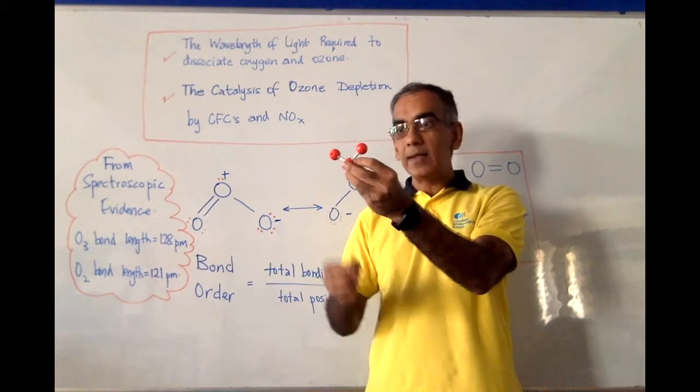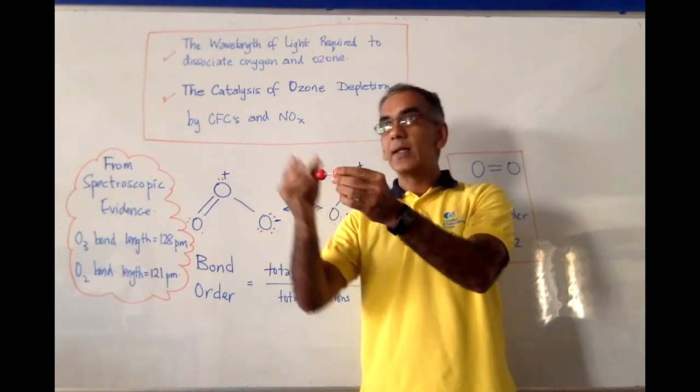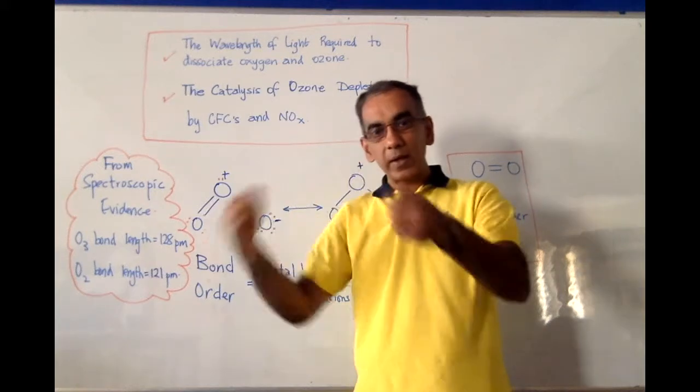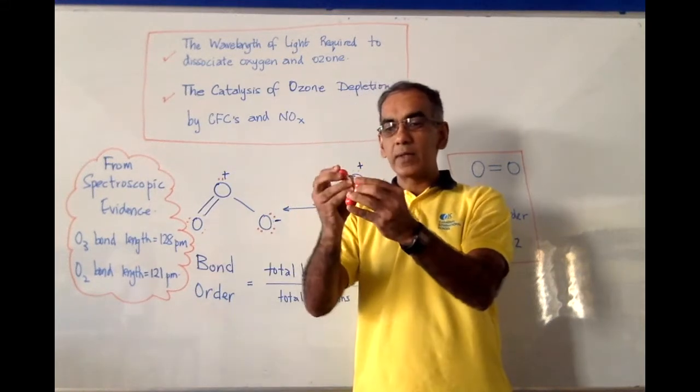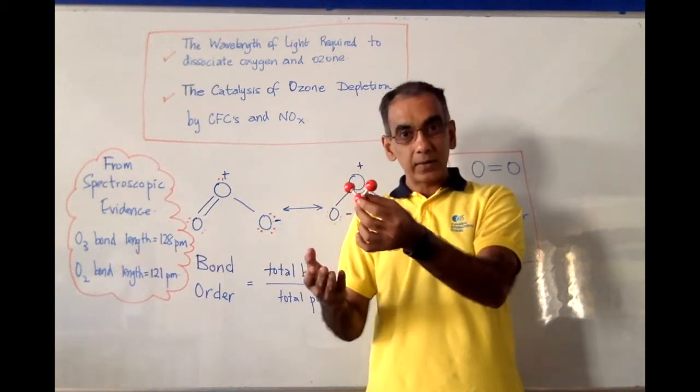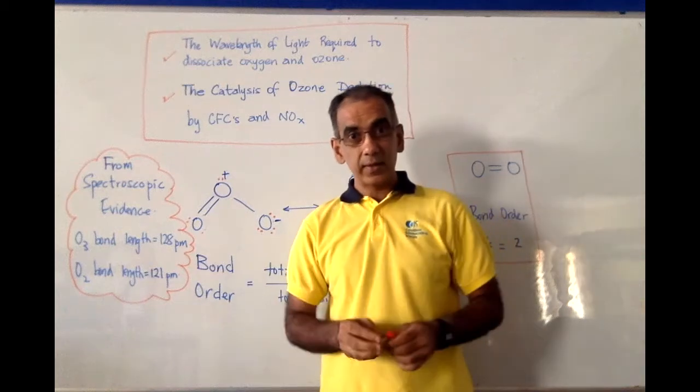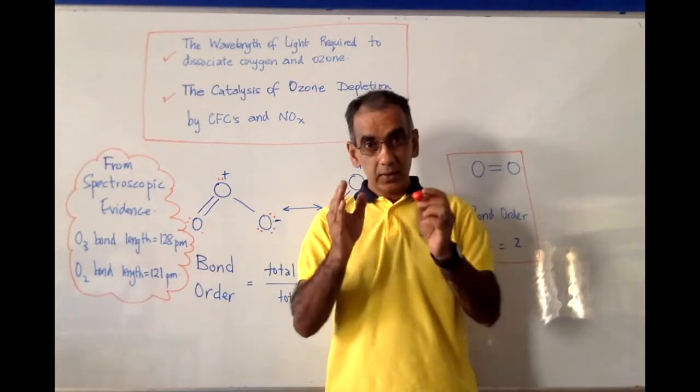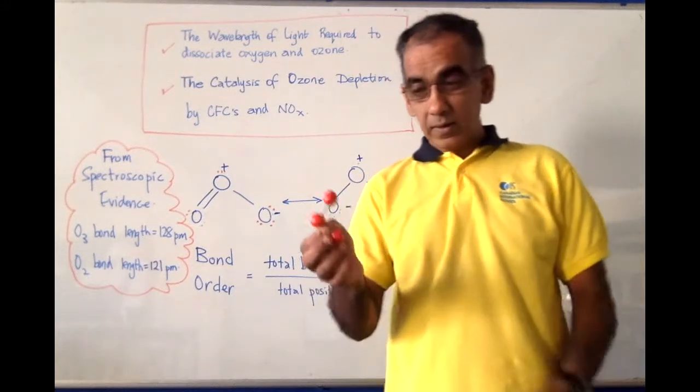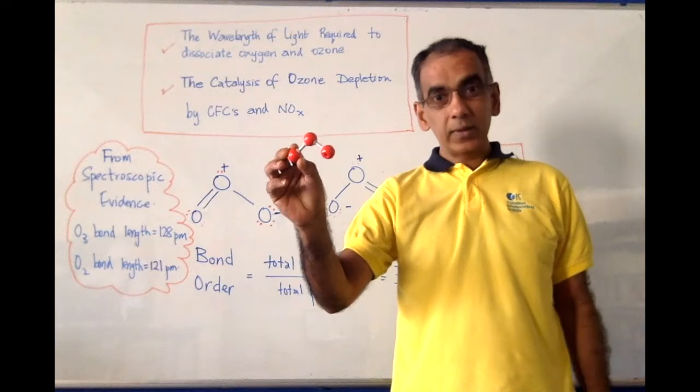And once again, it can repeat the process of shielding the Earth against the incoming ultraviolet rays. It breaks apart and it reforms. And it is with this ongoing cycle that ozone in the stratosphere shields the Earth from harmful ultraviolet radiation. Following the spectroscopic evidence, we know that this simple model of ozone is inaccurate.